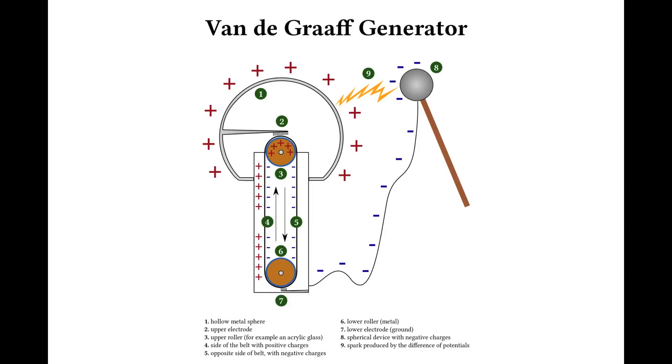This pulley is made of an acrylic glass. As the pulley at the top turns, it attracts electrons and removes them from the big metal dome. The rubber band carries them to the bottom where they're removed from the generator. And then the rubber band goes up and gets more.